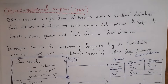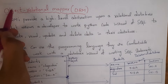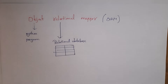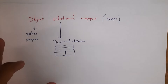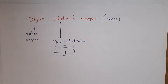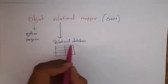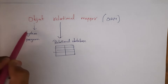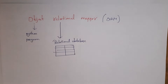ORM stands for Object Relational Mapper. 'Object' refers to our Python program, since Python is an object-oriented programming language. 'Relational' refers to a relational database — data which is stored in the form of tables is known as a relational database. ORM is nothing but using a Python program to create a relational database.